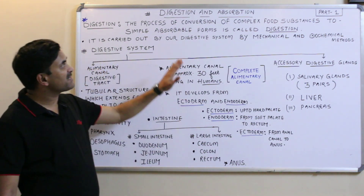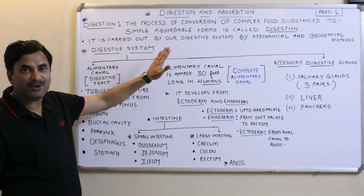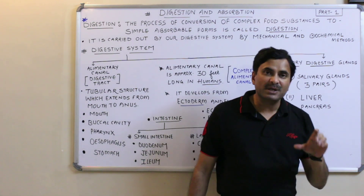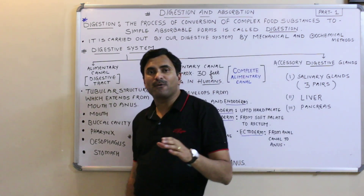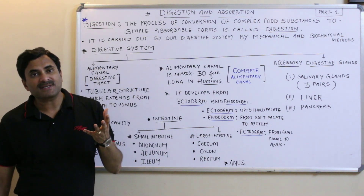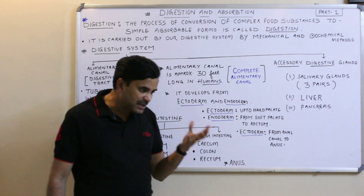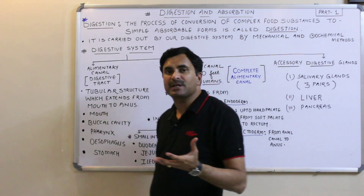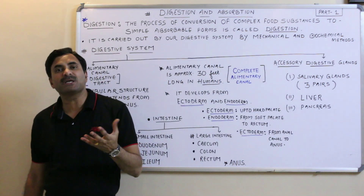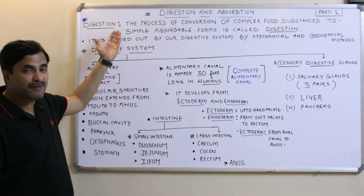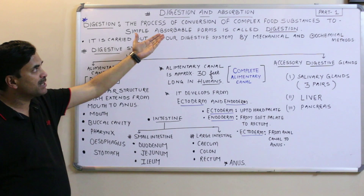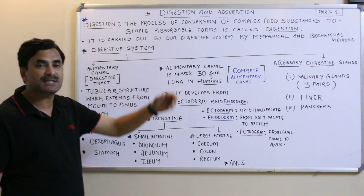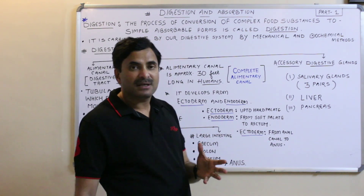Hello to all. Today we are starting a chapter related to human physiology, and that is the digestive system. First of all, you must know the definition of digestion. The digestion is a process by which the complex form of food is converted into simple form so that it can easily be absorbed. The process of conversion of complex food substances to simple absorbable forms is called digestion.